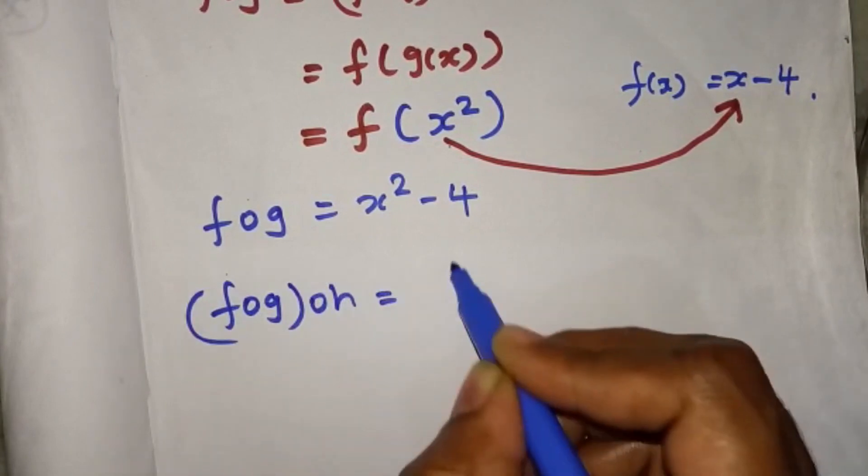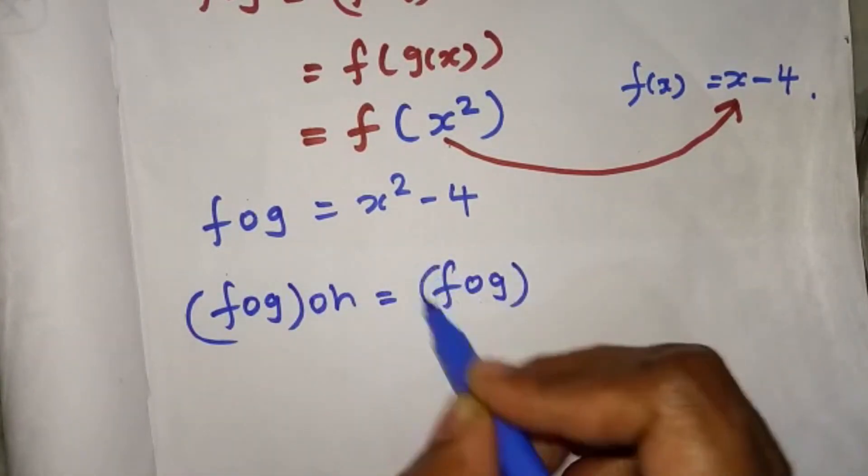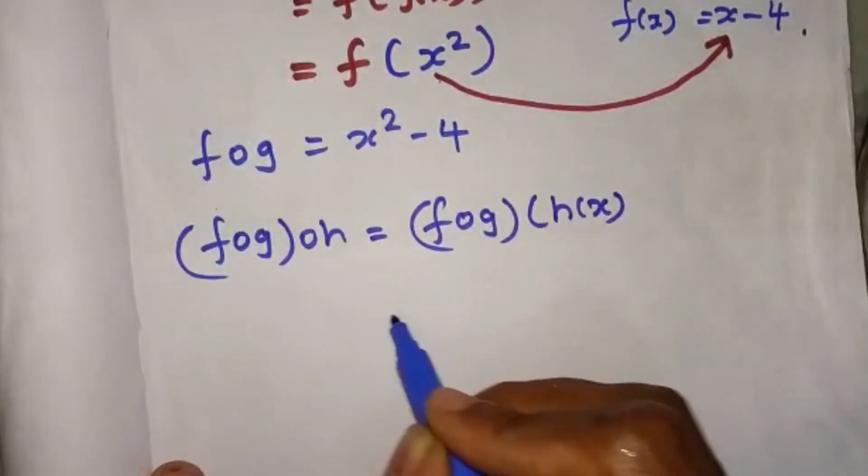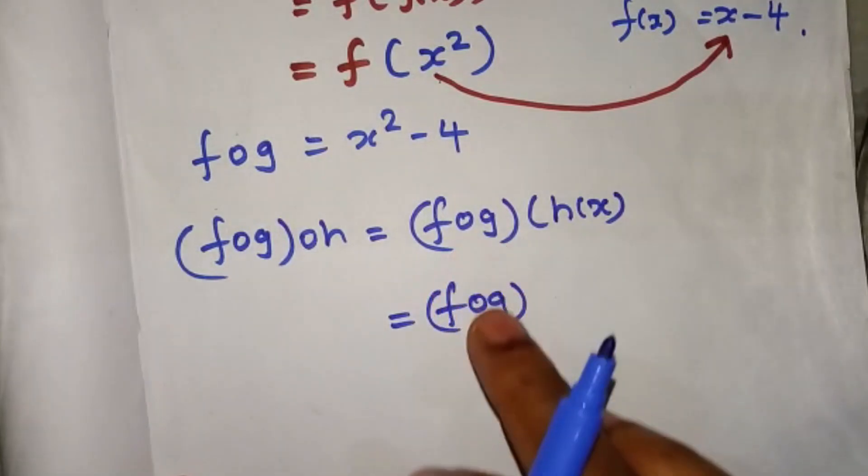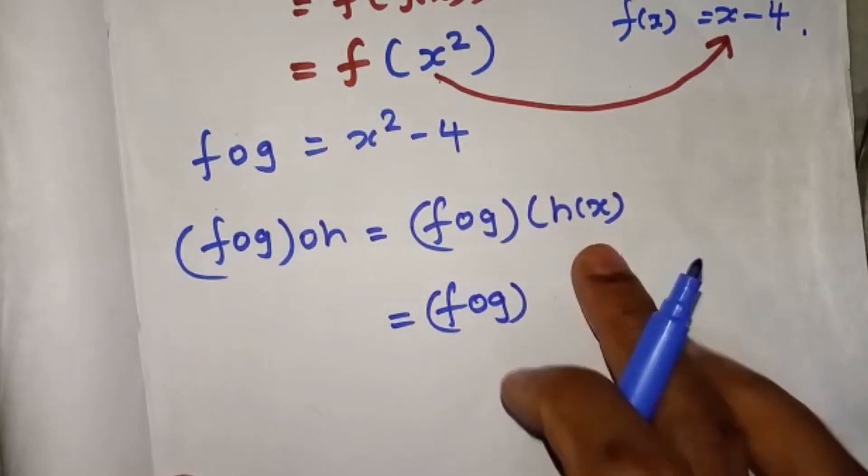f of g of h. This is a form of x square. Now f of g, first term, second term, value substitute.